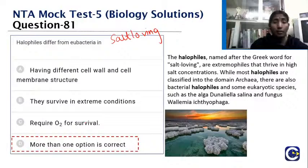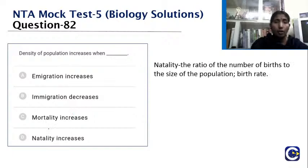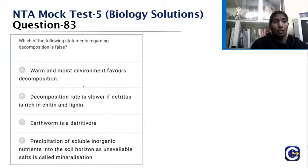Density of population increases with which — increased immigration, decreased immigration, increased mortality, or increased natality? Natality is the birth rate. When the birth rate increases — whether through germination, hatching, fission, or childbirth — population density increases. Population density is directly proportional to natality. The answer is increased natality.